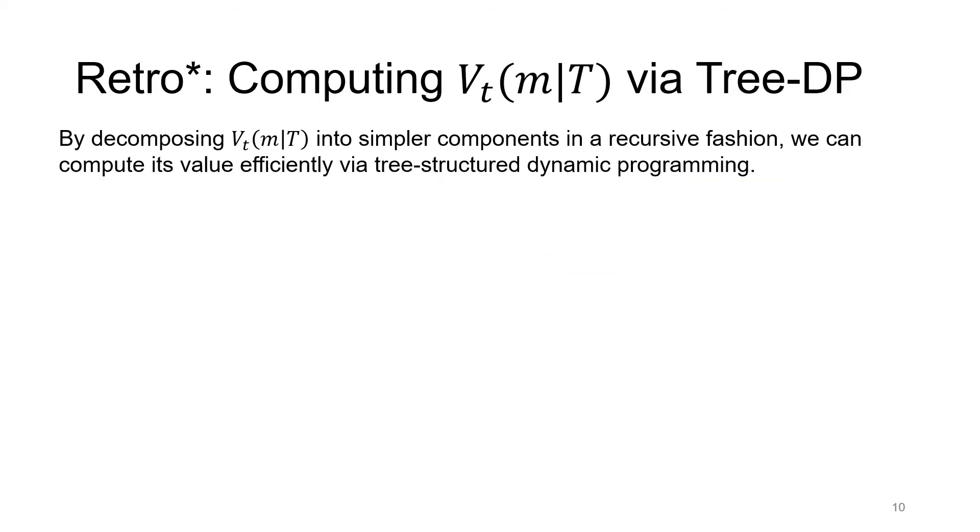Next, we will talk about how to compute Vt(m|T) efficiently. With the special structure of AND/OR tree, we can decompose Vt(m|T) into simpler components in a recursive fashion. And with this decomposition, we can then compute its value efficiently by tree-structured dynamic programming. First, we consider the boundary case, which is synthesizing a frontier node with itself. In this special case, the target molecule happens to be the molecule m itself. And since this is a frontier node, there will be no sub-tree rooted at this node. Therefore, the search tree here will be the empty set. In this slide, we will assume that this value is known and will denote it simply with Vm. Later on, Vm can be set a fixed value, or it can be learned from a planning dataset.